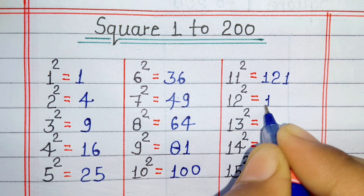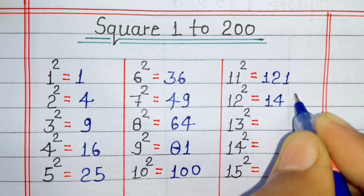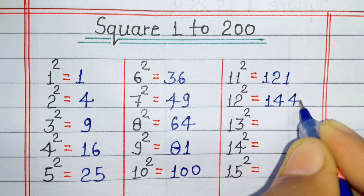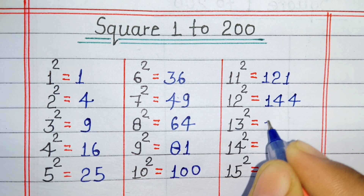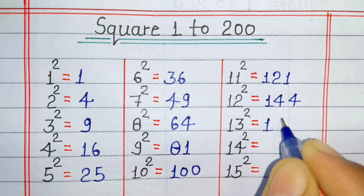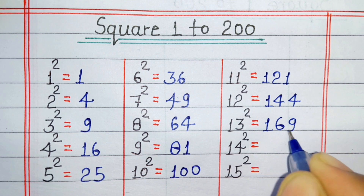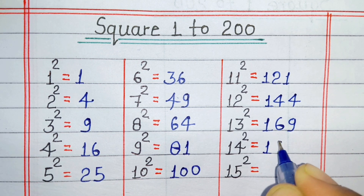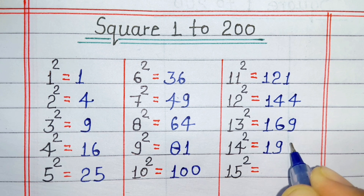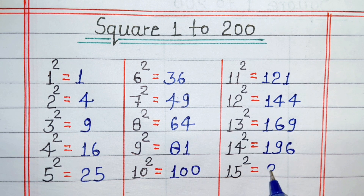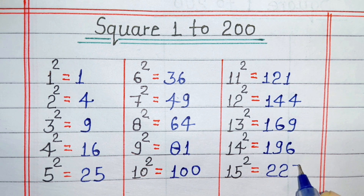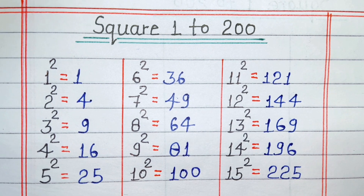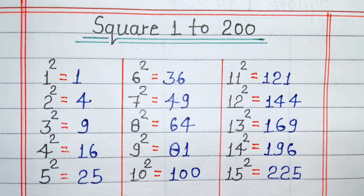Square of 12 is 144. Square of 13 is 169. Square of 14 is 196. Square of 15 is 225.